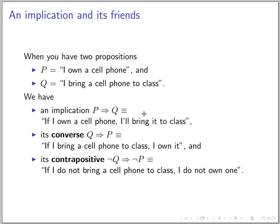Besides 'if and only if,' there are other terms related to implications. Given P implies Q, the converse is Q implies P. For example, if P is 'I own a cell phone' and Q is 'I bring a cell phone to class,' then P implies Q means 'if I own one I'll bring it,' but the converse says 'if I bring one to class I own it' — the hypothesis and conclusion are swapped. The contrapositive is not Q implies not P — you swap the roles and also negate both variables.